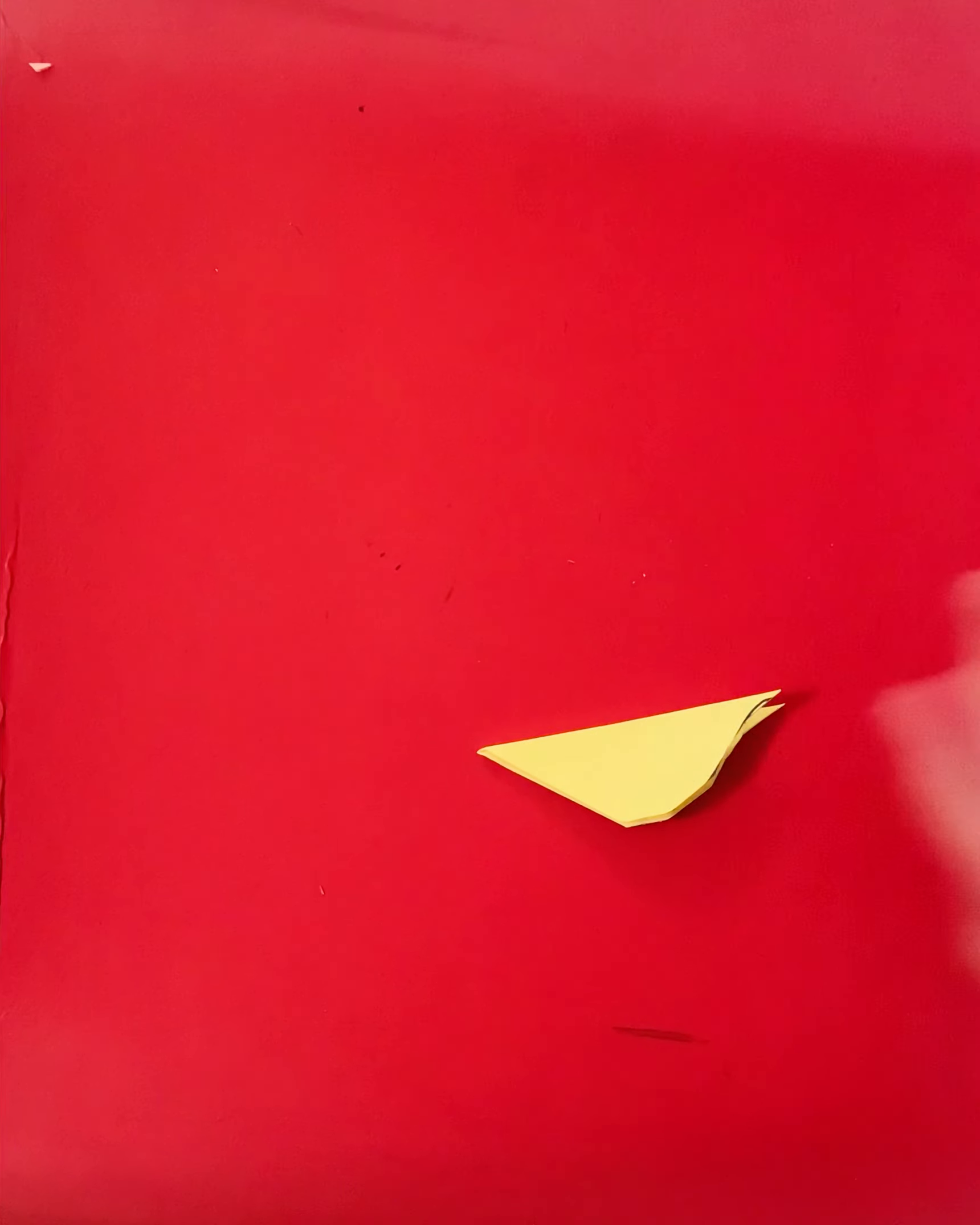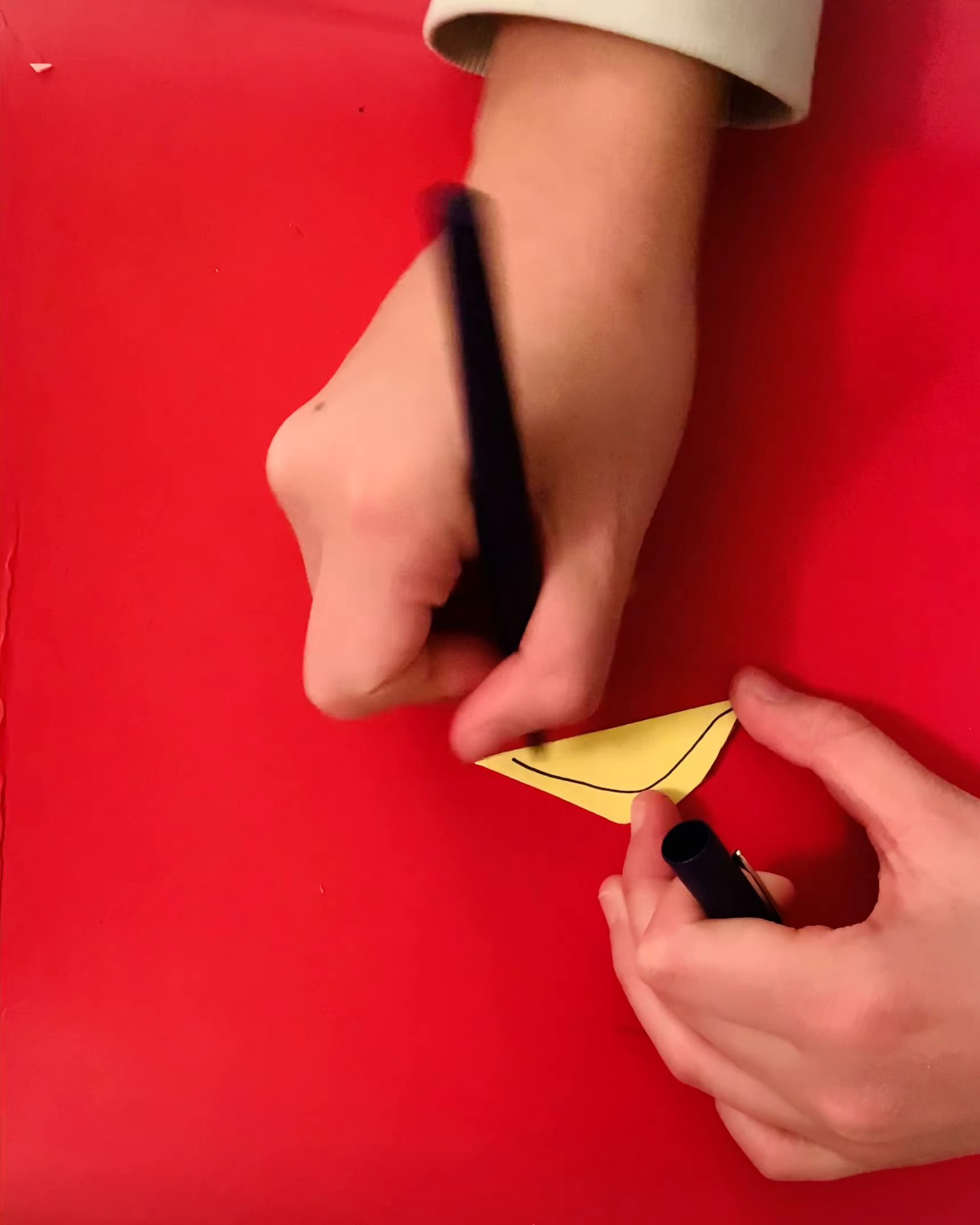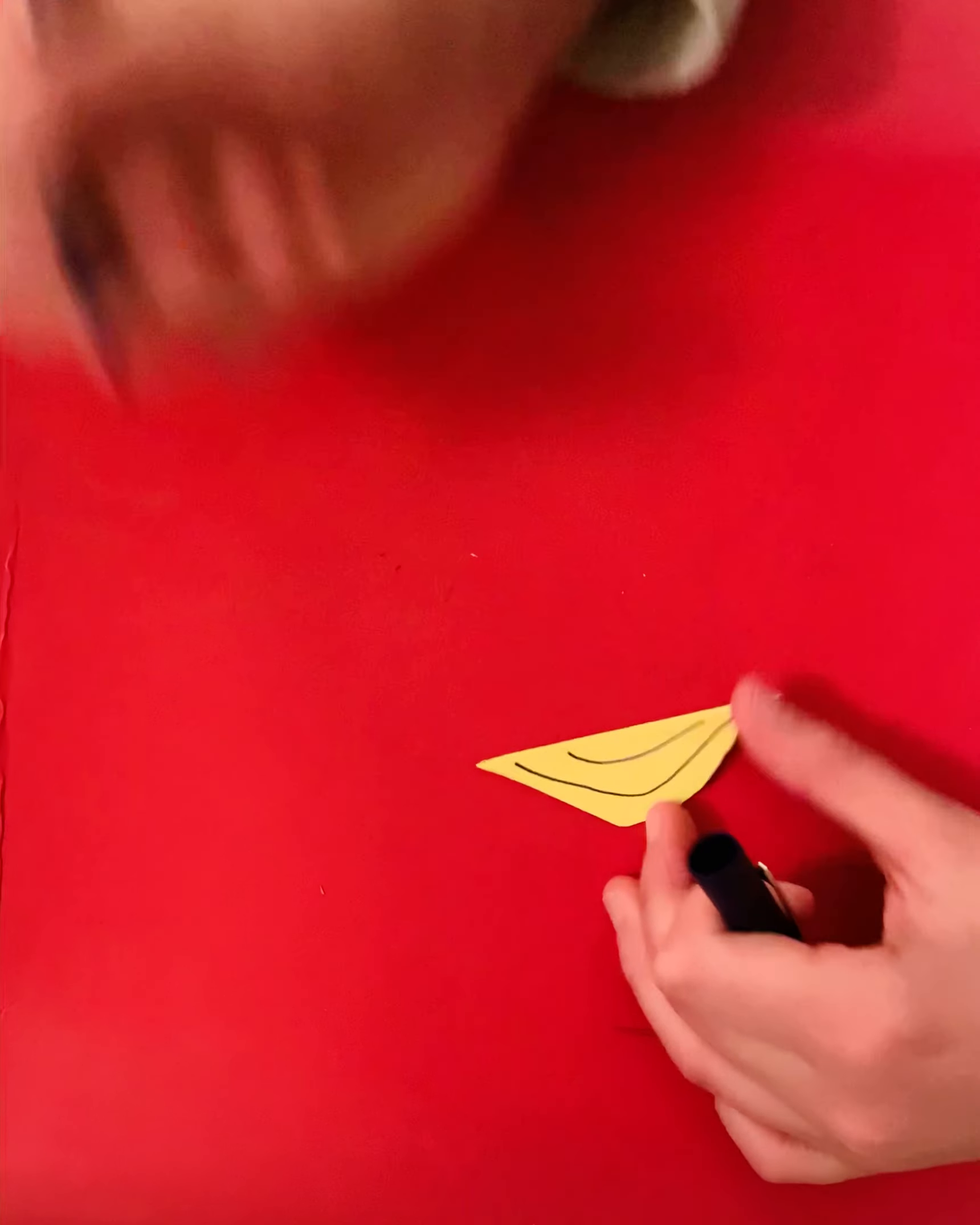So what we're going to do now is we are going to draw two lines like this. They're not exact lines, but they're just sort of lines to give you an idea of what's going to happen.